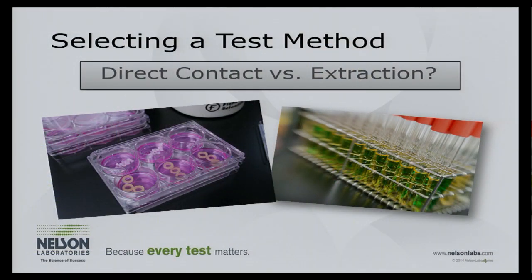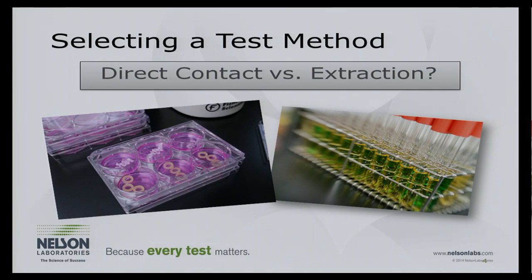When looking at the big three, we need to understand the difference between direct contact and indirect (extraction) versions. For the direct contact test, we put the test sample directly in contact with the test system — directly onto cells or directly onto an animal. For the extraction test, we put the device into a liquid media to make a chemical soup, pulling the chemicals off the device into that liquid, and then use that liquid as the test sample.